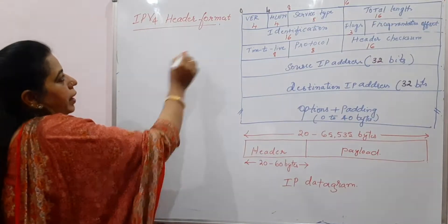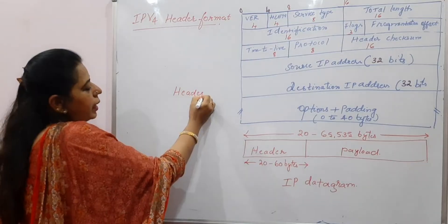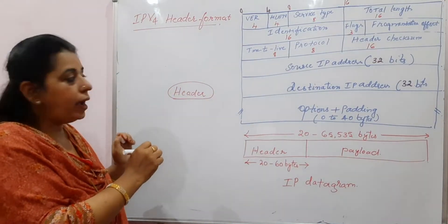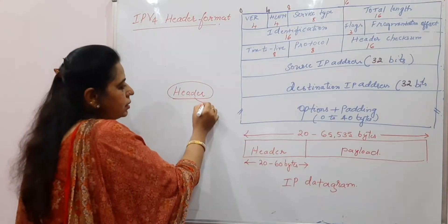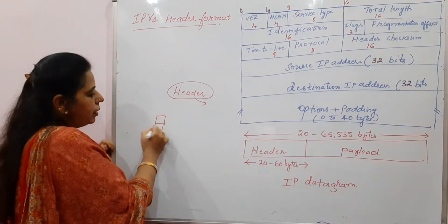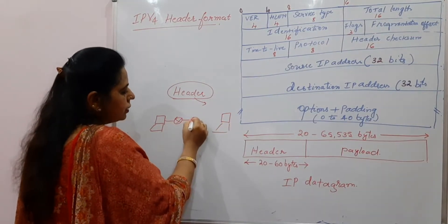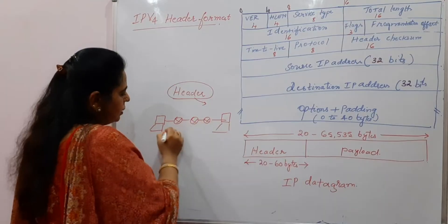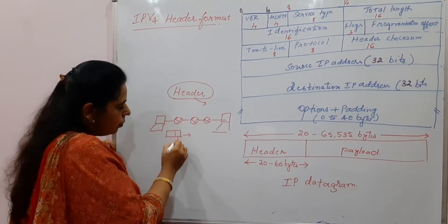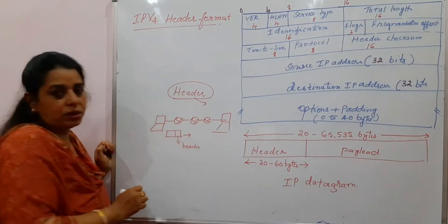This IPv4 header format — first of all, we need to know what are the components that are included in the header part and why it is required. From the sender to the receiver, via different networks, the packet travels. When the packet travels, it needs the header part. Without the header part, the packet cannot reach the destination.